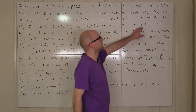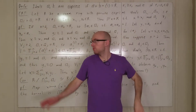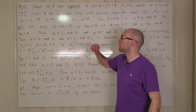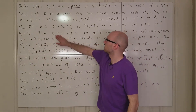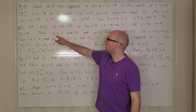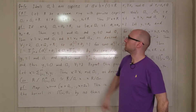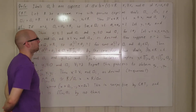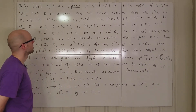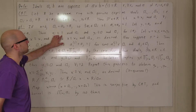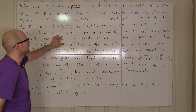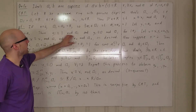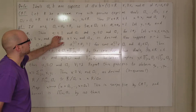We set y1 equal to a2 and y2 equal to a1. Then for i equals 1 or 2, yi is congruent to 1 mod ai. To verify: y1 congruent to 1 mod a1 means y1 minus 1 must be contained in a1.